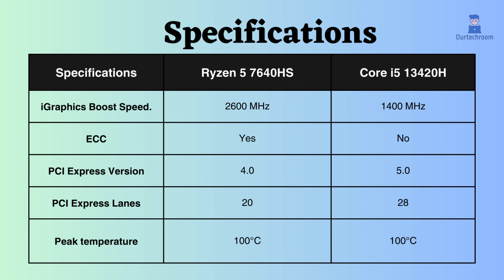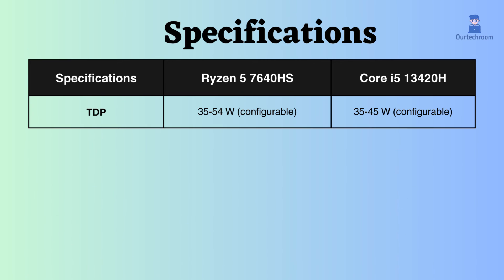However, it's crucial to consider device compatibility, motherboard support, and the specific requirements of your system. Both processors can withstand temperatures up to 100 degrees Celsius. The TDP of both processors is configurable, but the Ryzen can achieve a slightly lower TDP.